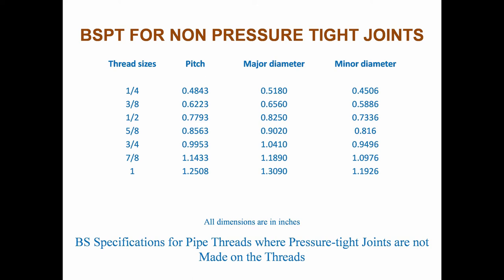For BSPT non-pressure tight joints, the threads in BS specifications are parallel fastening threads where pressure tight joints are not made on the threads. They are of Whitworth form and are generally used for fastening purposes such as the mechanical assembly of component parts, fittings, cogs, and walls. They are not suitable where pressure tight joints are made on the threads.